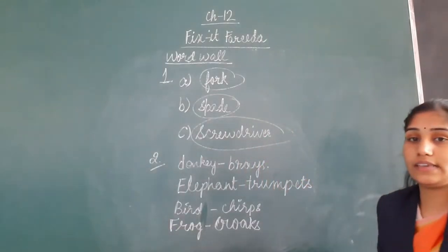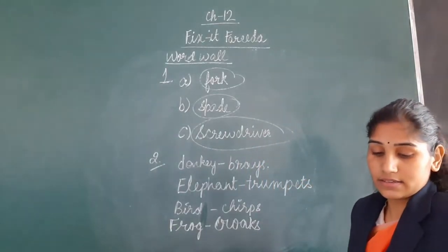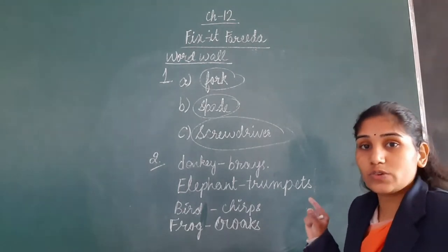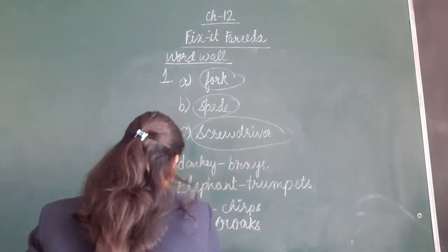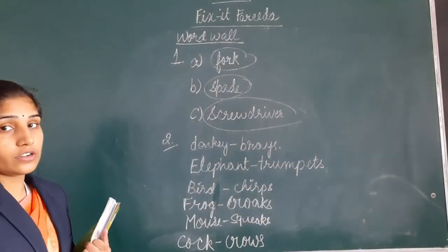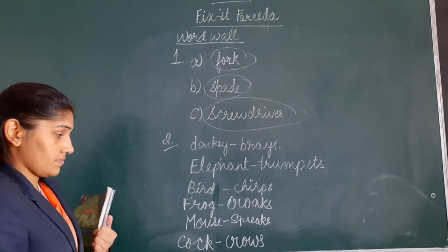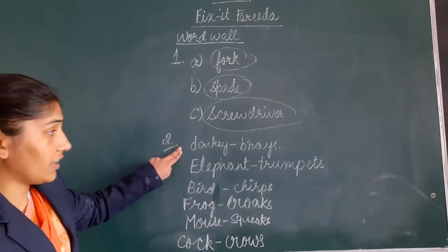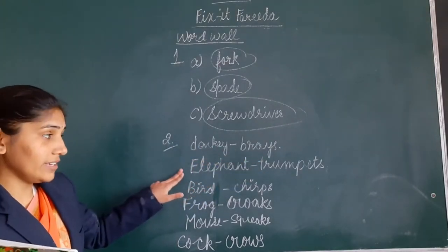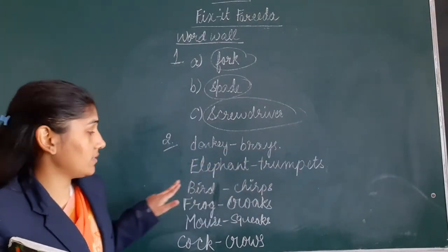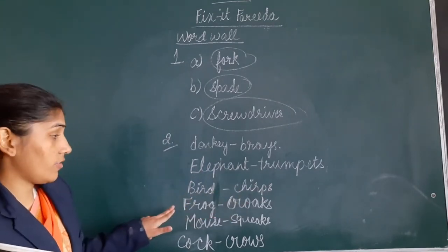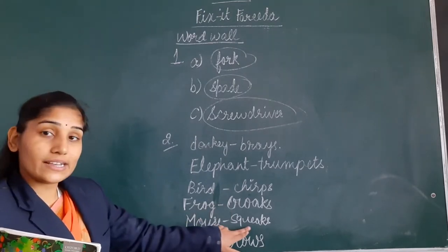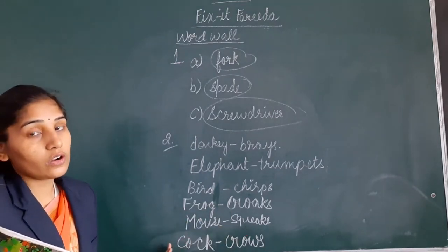F-R-O-G, C-R-O-A-K-S. Now next is squeaks. A mouse squeaks. So the answers are: donkey brays, elephant trumpets, bird chirps, frog croaks, mouse squeaks, and cock crows.